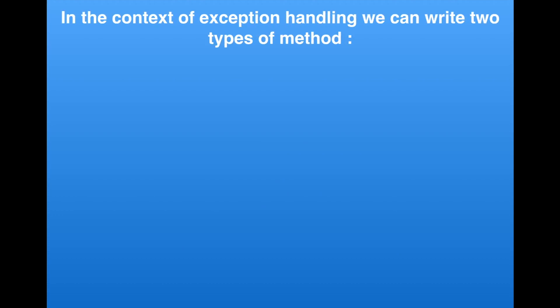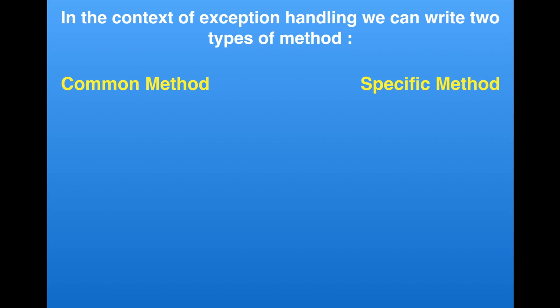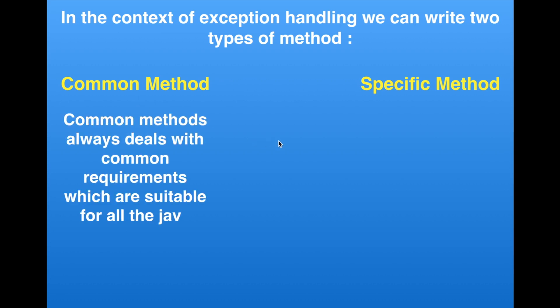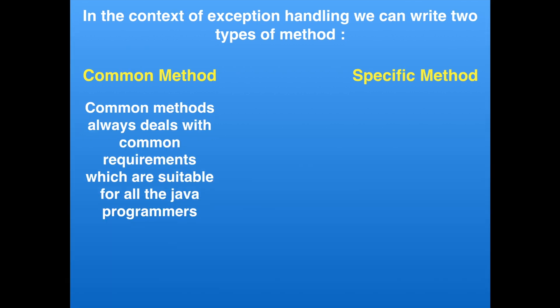In the context of exception handling, we can write two types of methods: the first one is a common method and the second one is a specific method. Just think about paneer — if you want to make paneer curry, you don't need to produce paneer yourself. You go to the market, purchase it, and use it. Similarly, common methods always deal with common requirements suitable for all Java programmers.